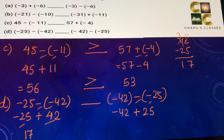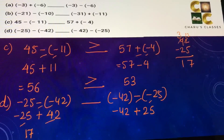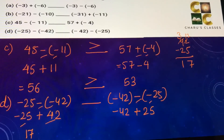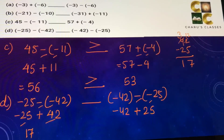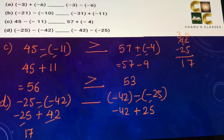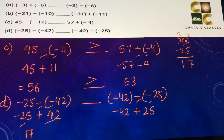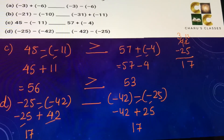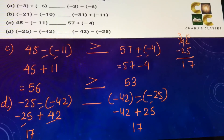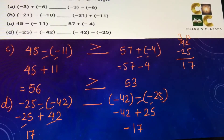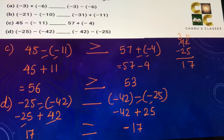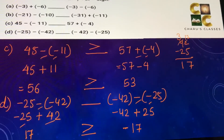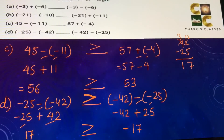For the left side: 42 minus 25 is 17, and 42 is the bigger number which is positive, so the answer is positive 17. On the right side: again 42 minus 25 is 17, but this time 42 has the negative sign, so the answer is minus 17. Comparing 17 and minus 17 — 17 is greater than minus 17, so the left side is greater than the right side.